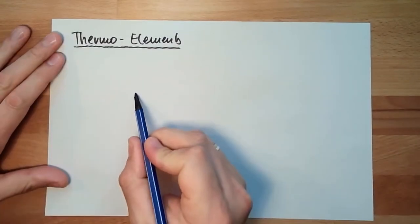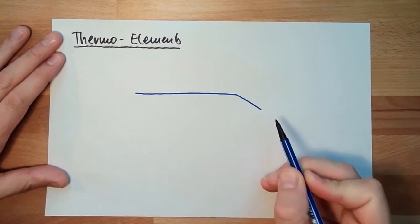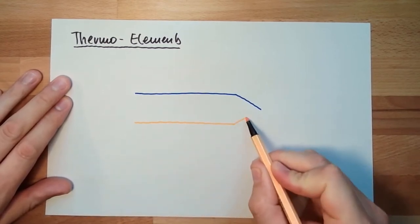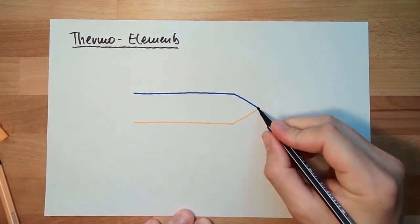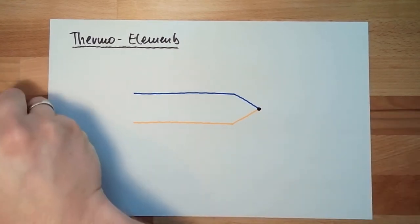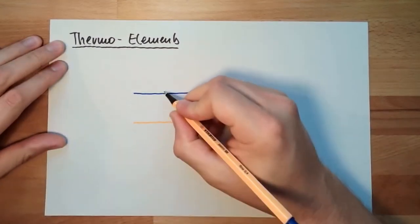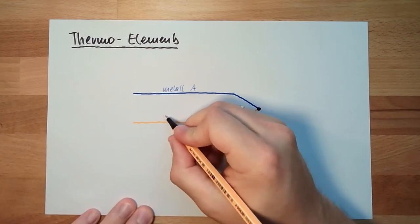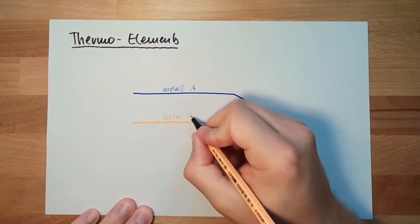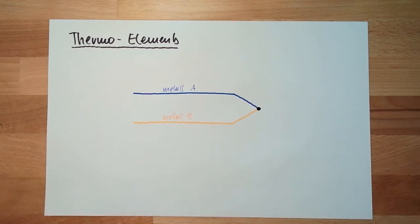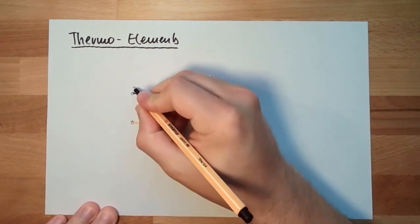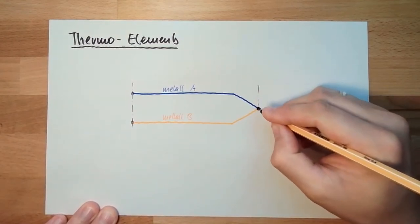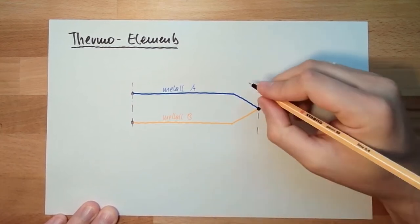We have two materials - material A and material B. They are conductively connected. I'll call this metal A and here is metal B. Here we have the connections, and here we have the measurement point.